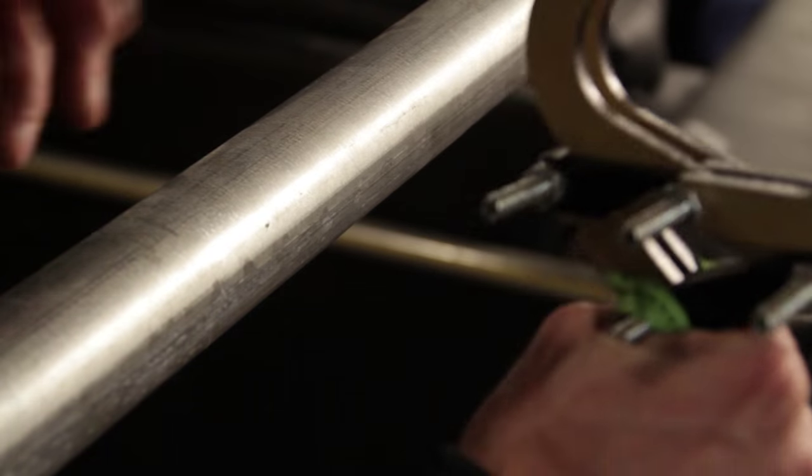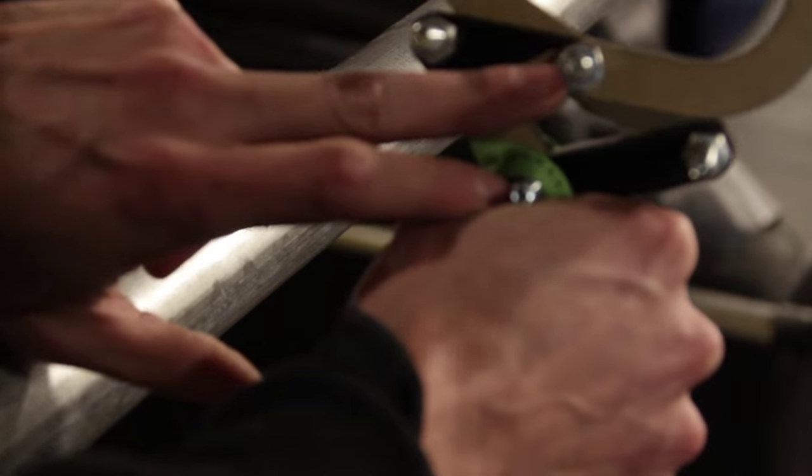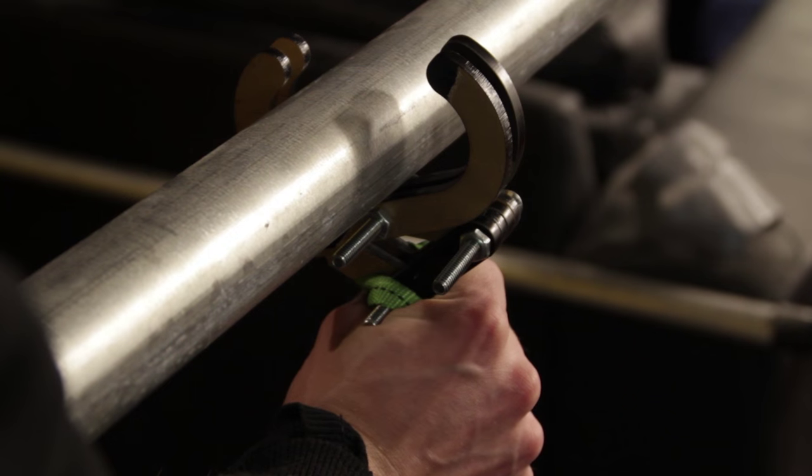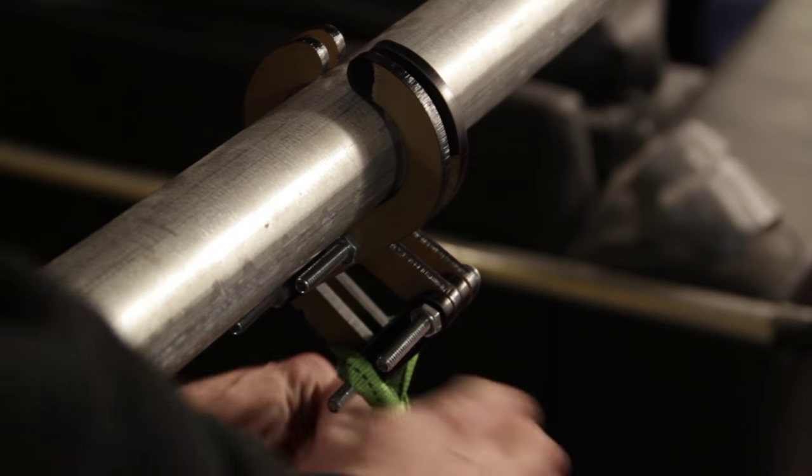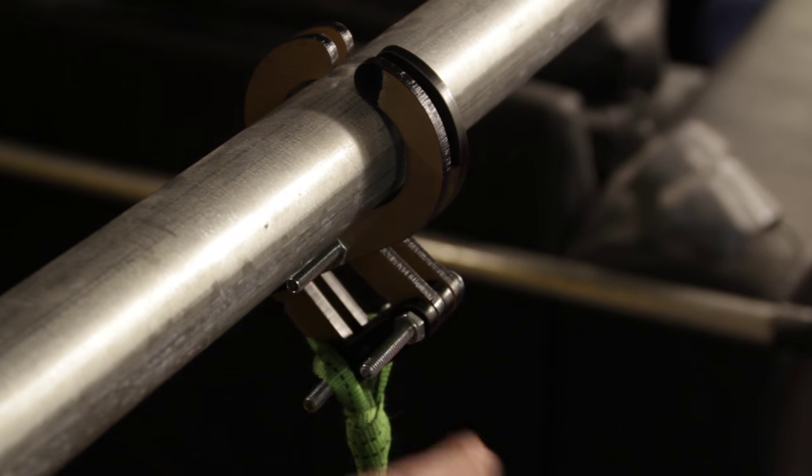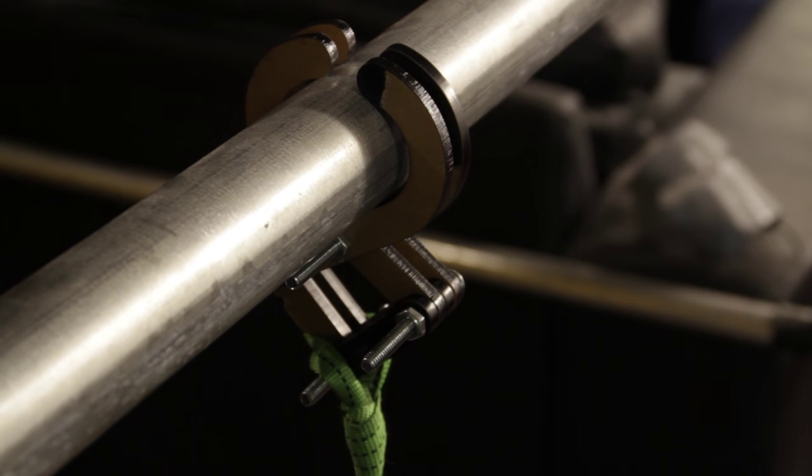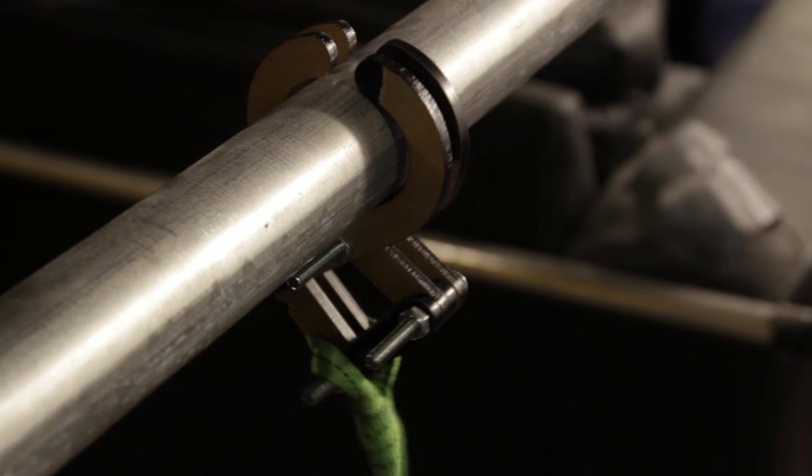So the neat thing with the design is once we add that spring it's going to want to hold it open. But if you put it around something and you pull it really tight, it actually automatically closes and look, now you can repel down. And once you're done, give it a little so the spring will help with this.